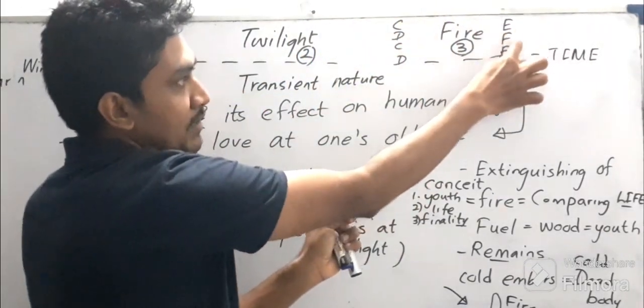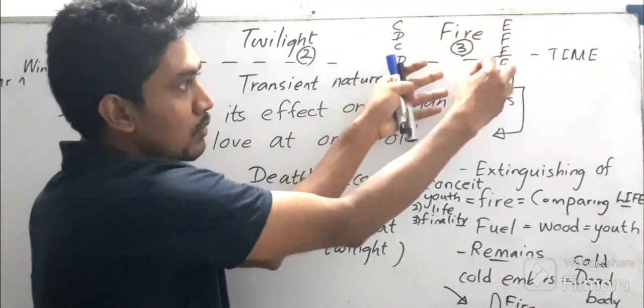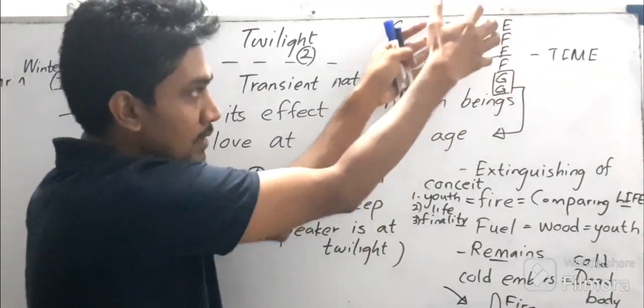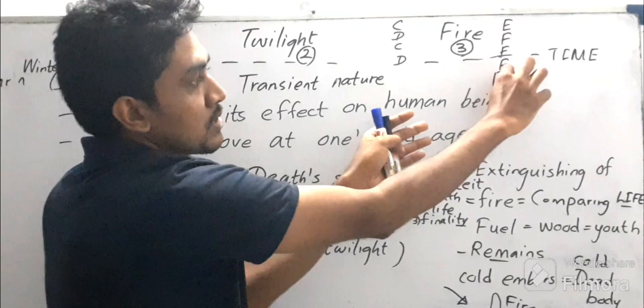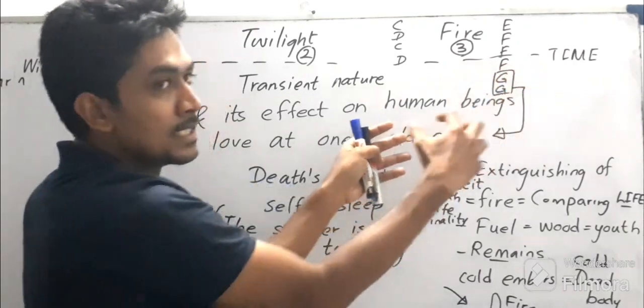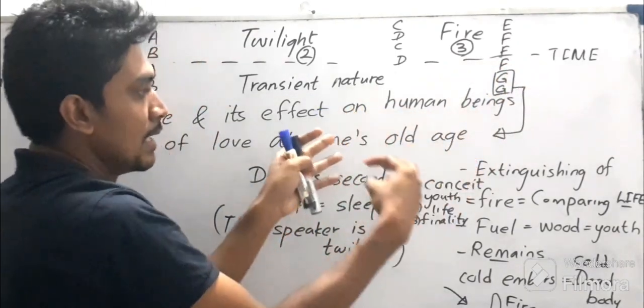The solution in the last two couplets—the penultimate line brings out the bigger argument, that is the value of love at one's old age.